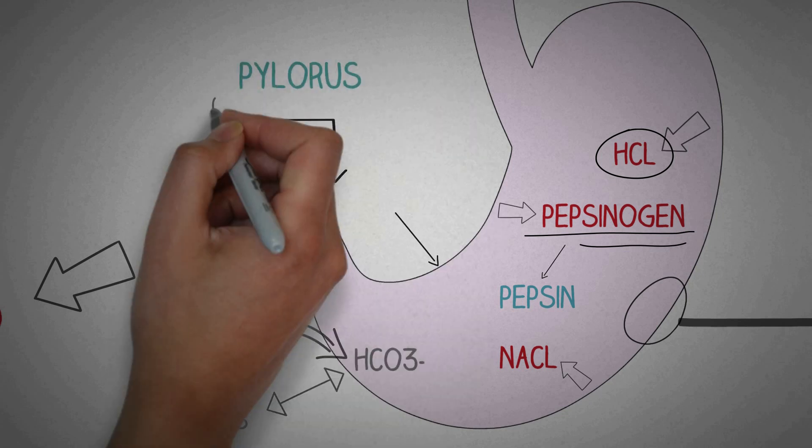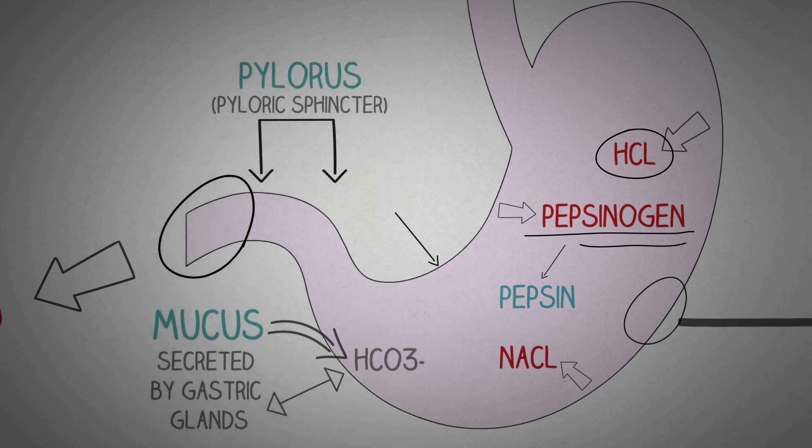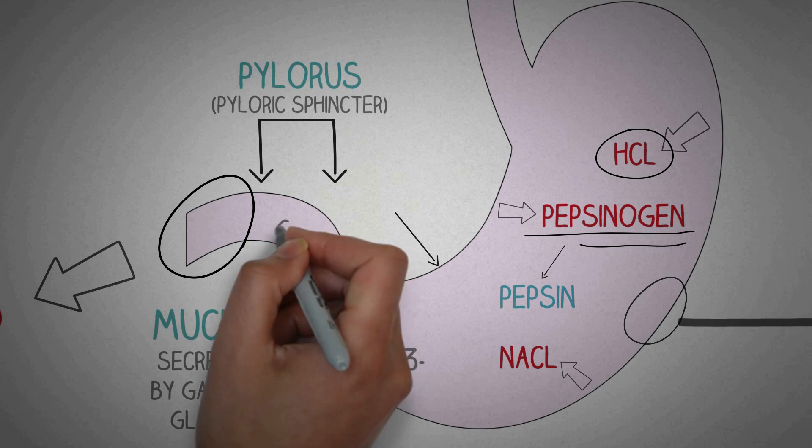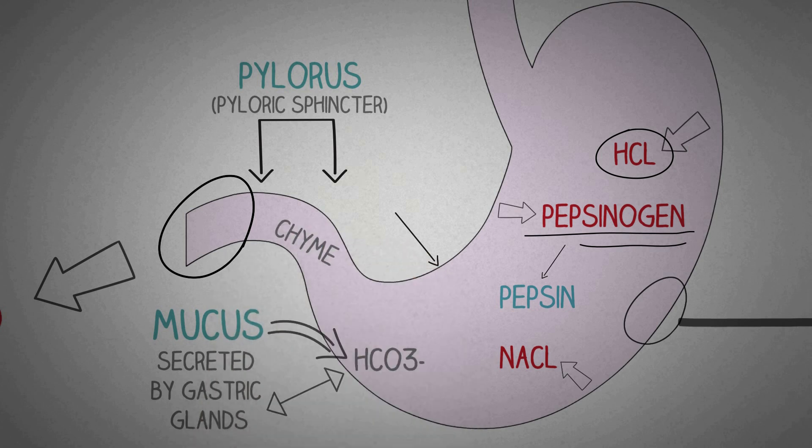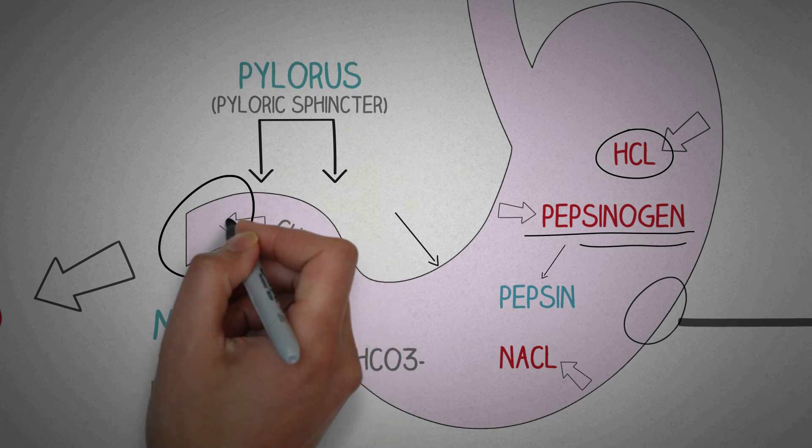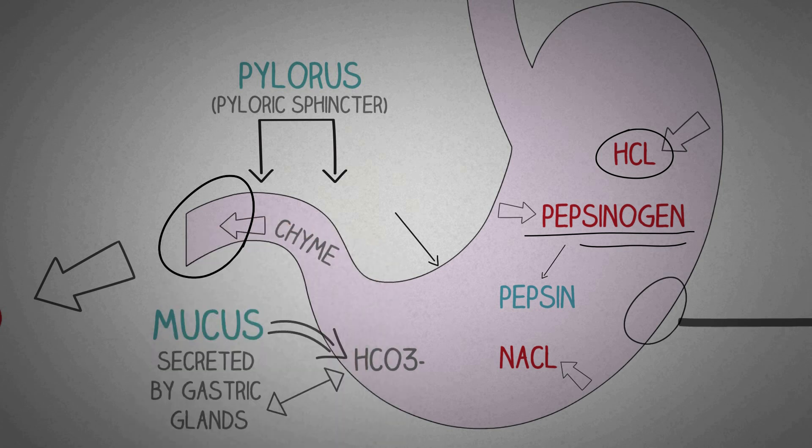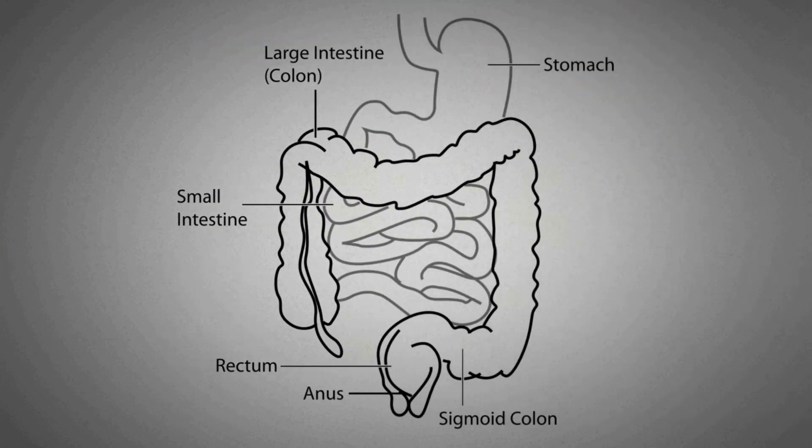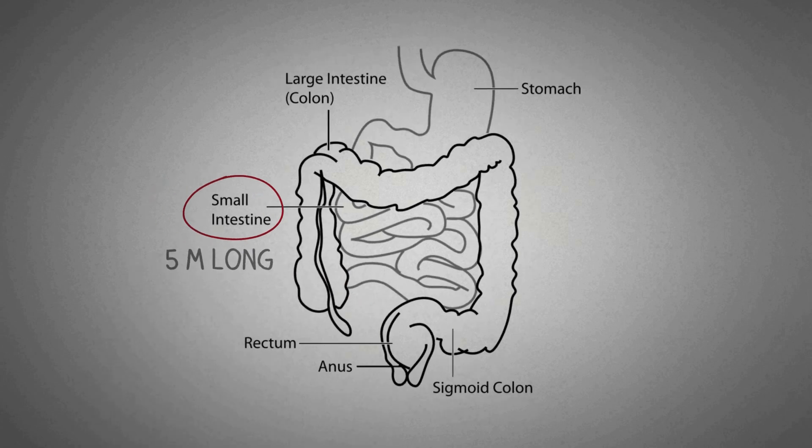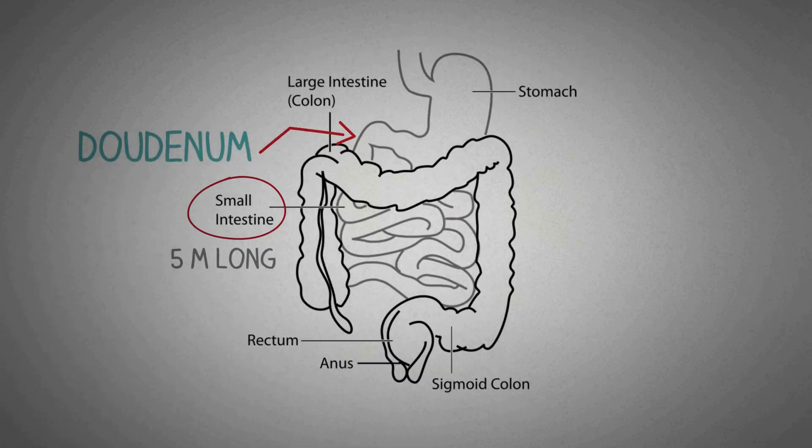The lower part of the stomach is called pylorus and it also has a strong smooth muscle sphincter which opens usually after one hour of taking a meal. Till then the food has been converted into a semi-liquid form known as chyme which is slowly released forward. Next, the food passes into the small intestine which is a 5 meter long tube divided into three parts duodenum, jejunum and ileum.